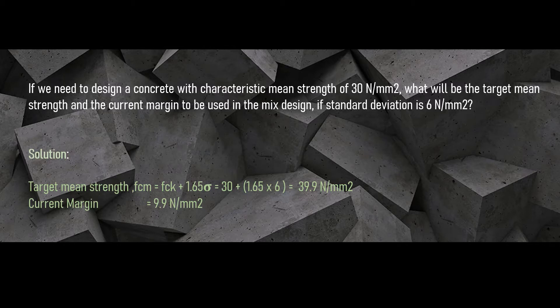In the question given, the target mean strength Fm is Fck plus 1.65 sigma equals 30 plus 1.65 into 6, which gives 39.9 N per mm2. From the question, we have Fck as 30 and the standard deviation as 6. After substitution, we got the value of target mean strength. The term 1.65 sigma is the current margin, which will give a value of 9.9 N per mm2.